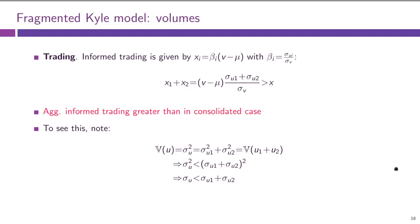A slightly more interesting aspect is trading volumes. If we compute our X_Is, the trading volumes by informed traders in both markets, we will have linear strategies just as before. The beta_Is are given by ratios of volatilities: sigma_UI divided by sigma_V. The slides might be a little small, but I hope you can see them or you have the slides at hand.